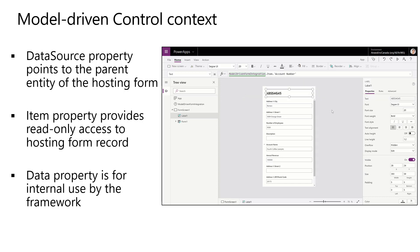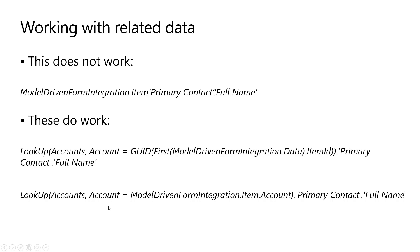As you're working through, you also have the ability to interact with related data. The traditional methods you might use to facilitate some of that, particularly from a related perspective, don't necessarily work. So you can't go into the model-driven form integration and simply grab the full name for the contact entity directly. You do have to do lookup scenarios — for example, a lookup on the account where the account GUID is pulled from the model-driven form integration to match the primary contact's full name. You do have to do lookup scenarios in order to find specifically what item you want to work with.